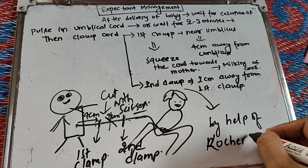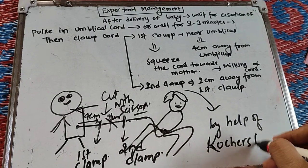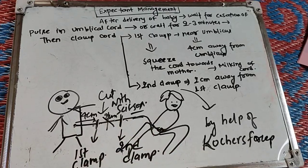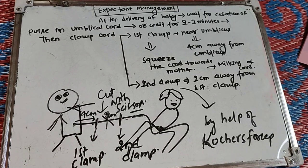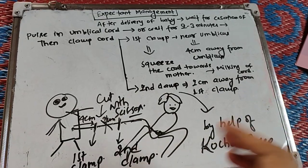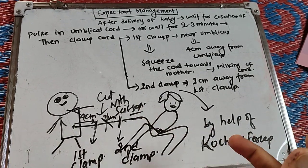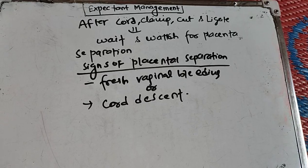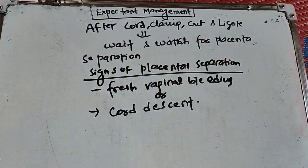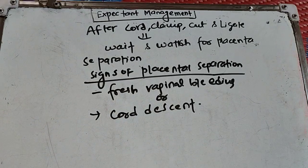Using a forcep, the cord is clamped and divided. Once the cord is clamped, cut, and ligated through delayed cord clamping, you can then watch for the signs of placental separation.